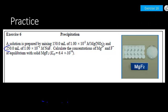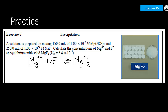Number 19 in your packet deals with mixing two solutions — magnesium nitrate and sodium fluoride to make magnesium fluoride — and we're asked to determine the concentration once they've reached equilibrium. This looks more complicated than it actually is. It's really just a limiting reactant problem, because as magnesium ions and fluoride ions collide in solution, they will form magnesium fluoride.